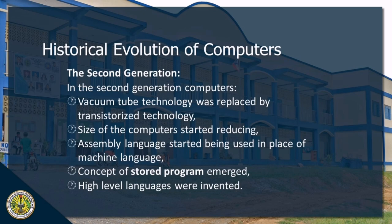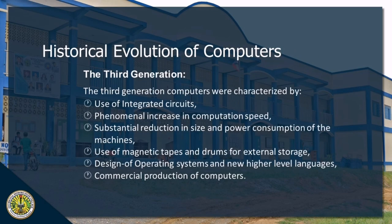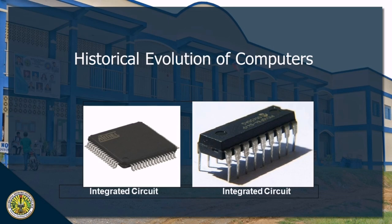In the second generation of computers, vacuum tube technology was replaced by transistorized technology, and the size of the computer started reducing. Assembly language started being used in place of machine language, and the concept of stored programs emerged. High-level languages were invented. The third generation of computers was characterized by the use of integrated circuits, a phenomenal increase in computation speed, substantial reduction in size and power consumption, the use of magnetic tapes and drums for external storage, design of operating systems and new higher-level languages, and commercial production of computers. This is what an integrated circuit looks like.